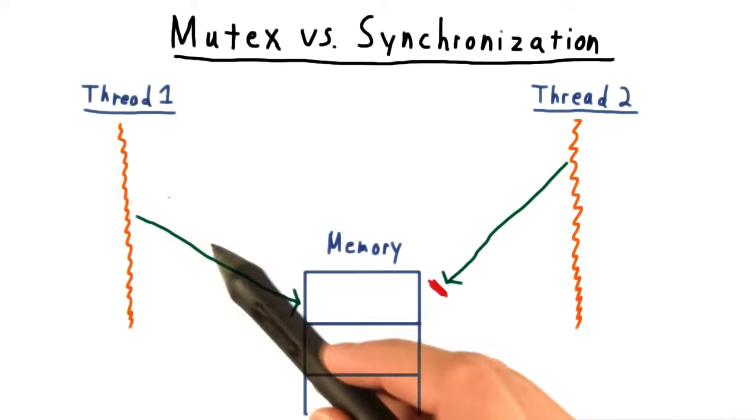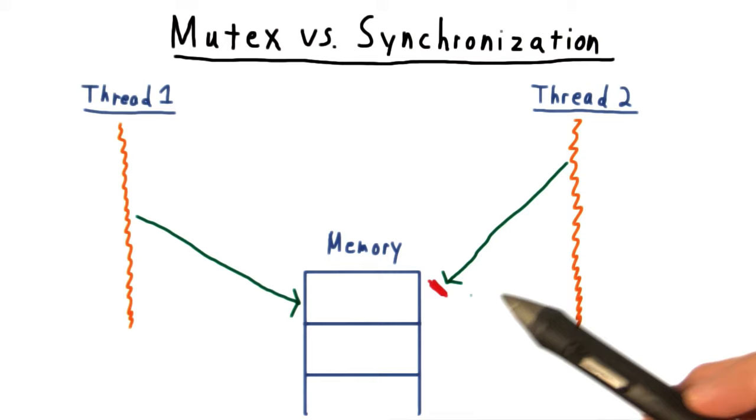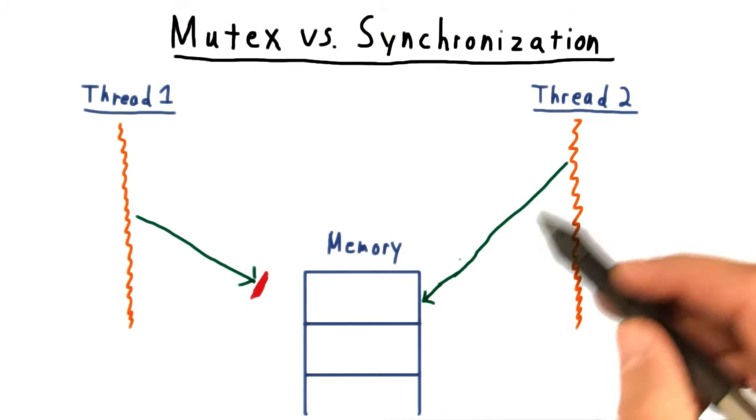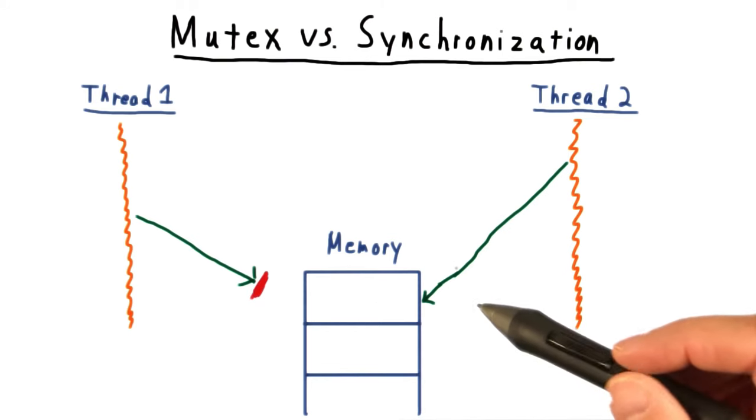For example, if thread one is accessing this memory, then the lock should block thread two from accessing it. Or vice versa, if thread two is accessing the piece of memory, then the lock should block thread one from accessing it.